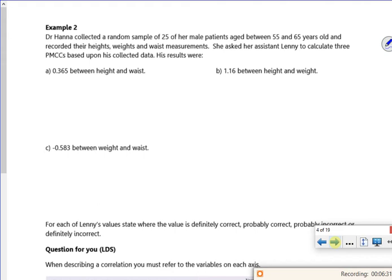Let's have a look at this example then. So it says, Dr. Havoc collected a random sample of 25 male patients, aged between 55 and 65, recording heights, weights, waist measurements. She asked her assistant Lenny to calculate PMCCs. So we've got some results, and I guess we just want to decide if they were okay. You kind of expect it to be positive, because you'd expect the kind of taller you are the heavier you are. There's not necessarily a major correlation between it, because you're going to have tall people who are slim, short people. So if it's expected to be positive, I guess this is okay. So it's probably correct.